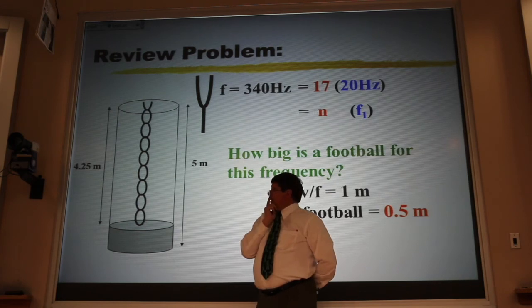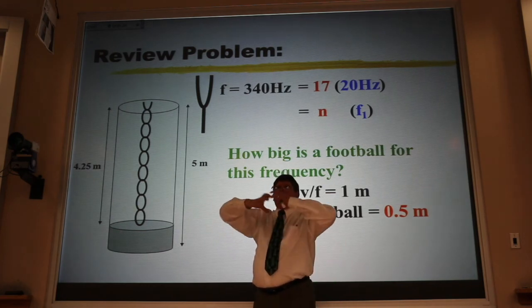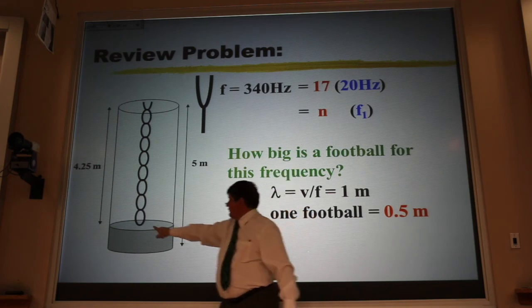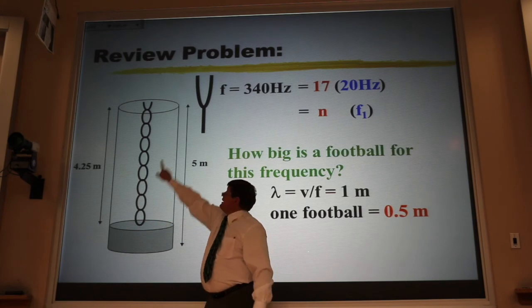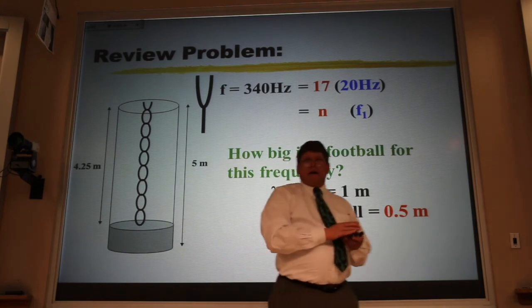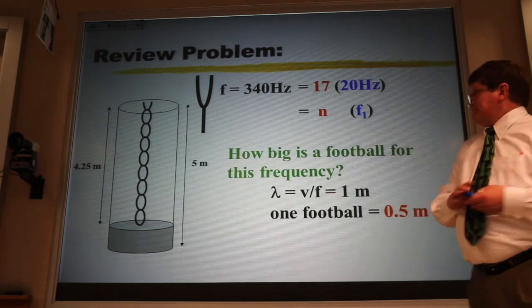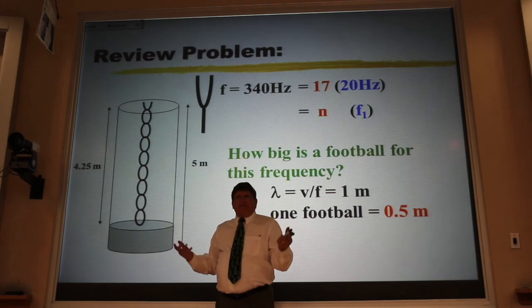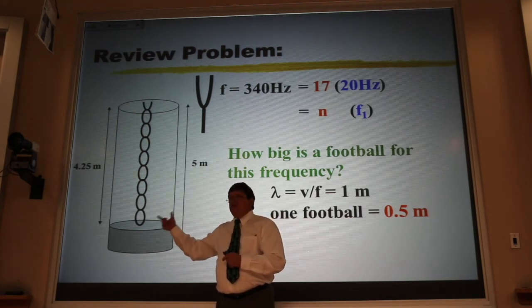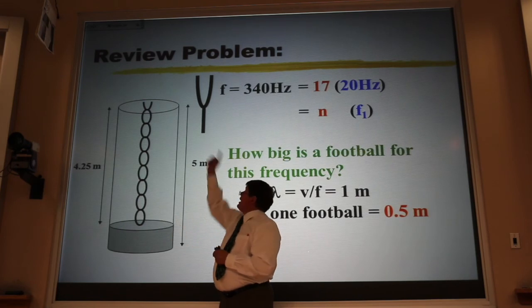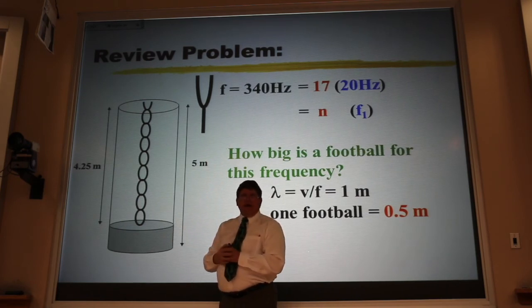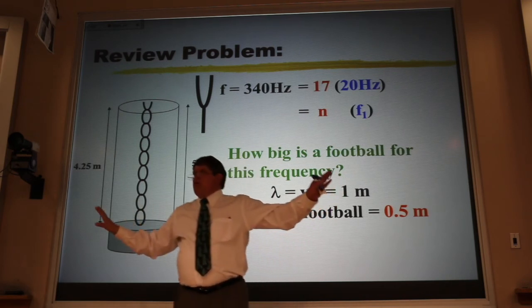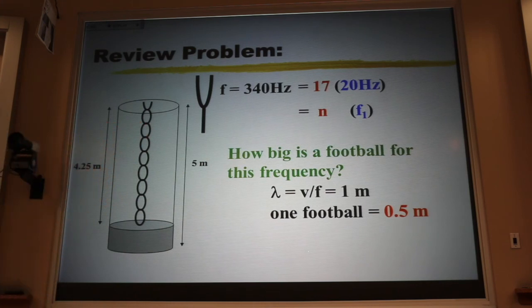The reason this echoes, the reason that this gives me a booming sound is because it fits the boundary conditions, namely a node at this closed end and an anti-node at the open end. Now, if I lower the water level a little bit, that goes away. These footballs are tied to that frequency. And so if I lower this water just a little bit, that frequency no longer resonates with this air column. The echo goes away.